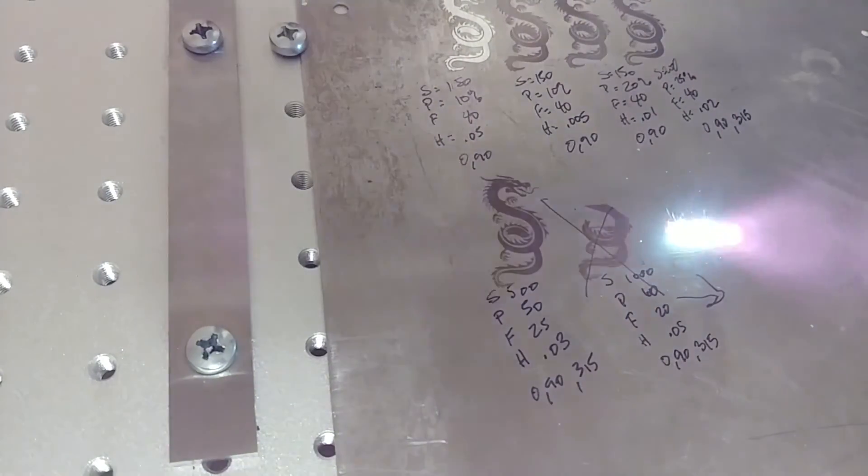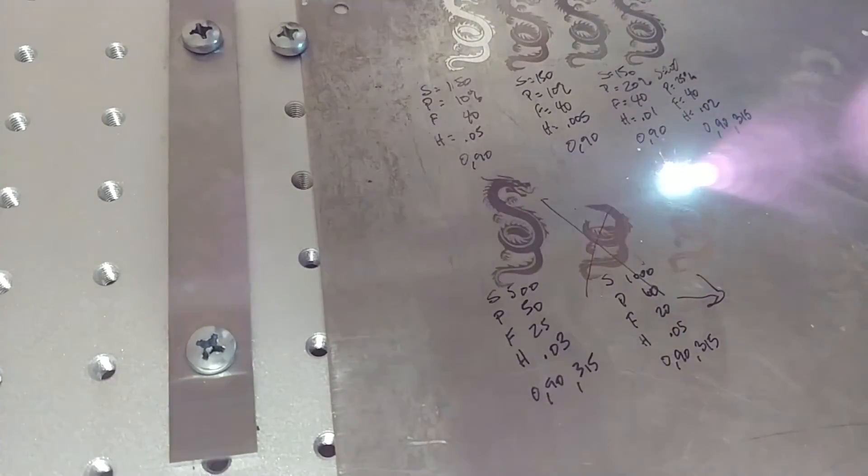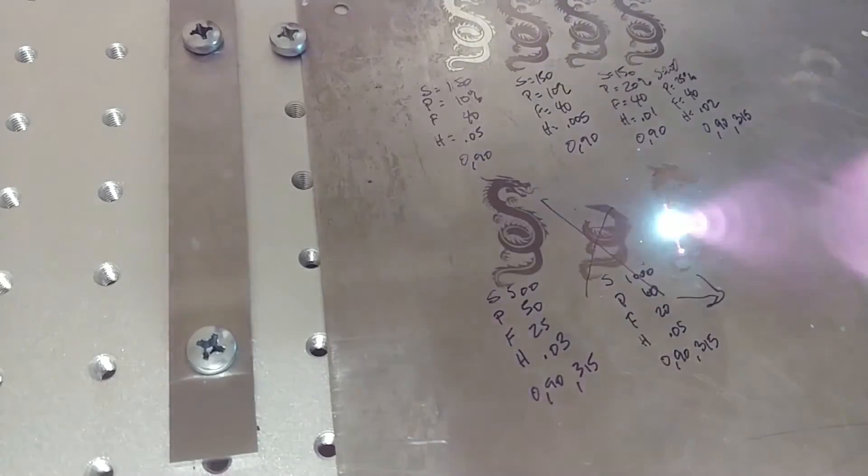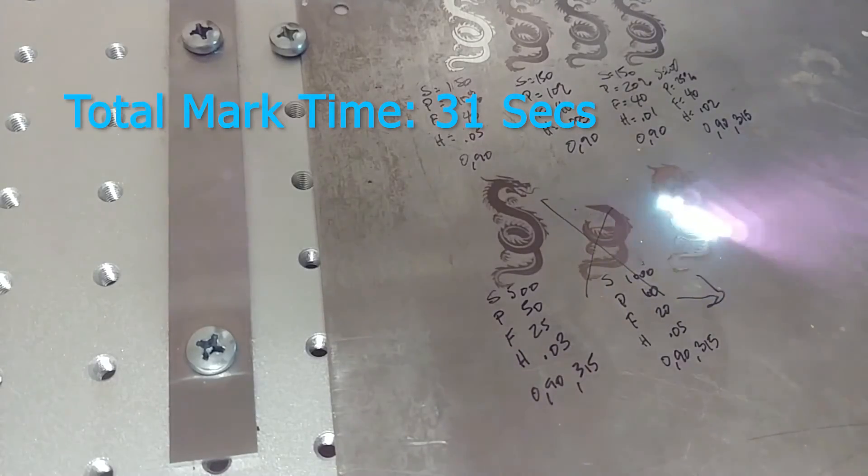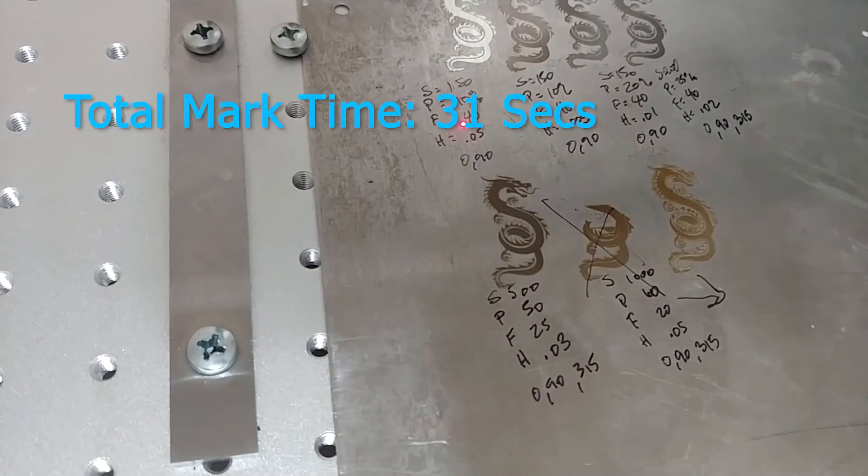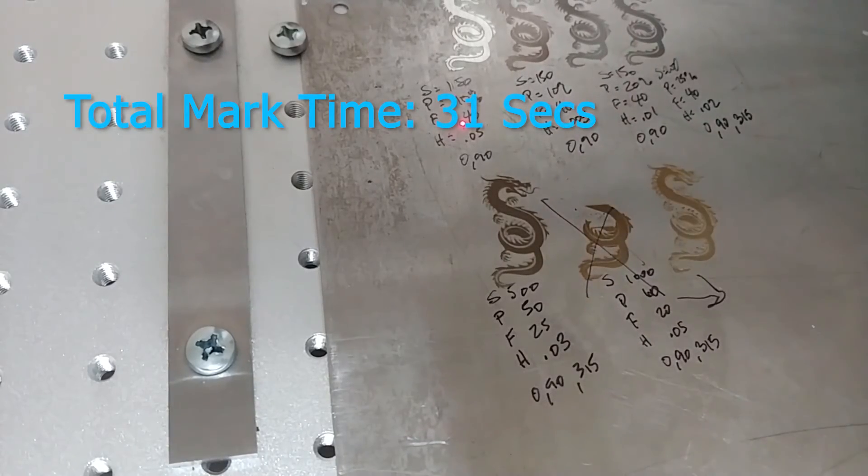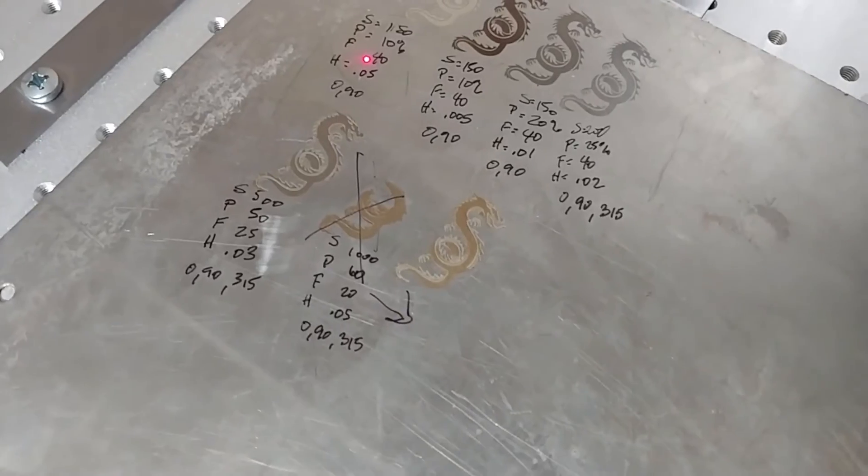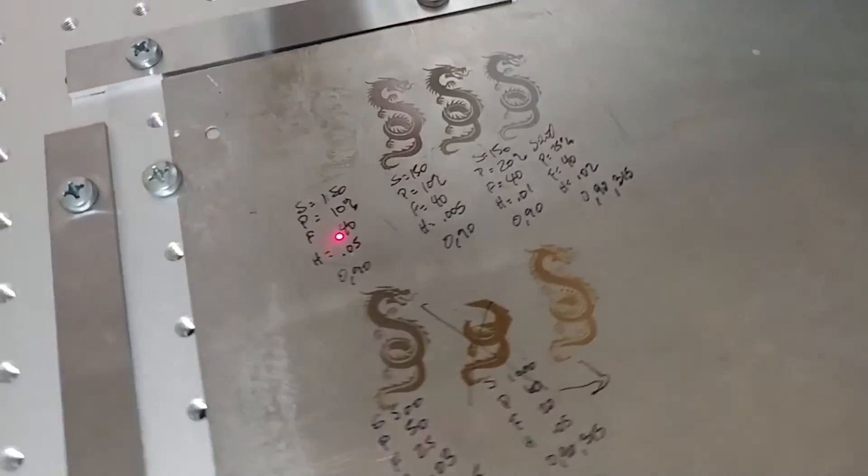I changed my settings by writing them on the stainless steel physically, but I didn't actually change them in the computer before I started the mark, so I stopped that one partially through. We're going to increase the speed to double, 1,000 millimeters per second. We increased the power to 60%. The frequency is now all the way down to 20 kilohertz. The hatch is all the way up to 0.05 millimeters, and we're still doing the three angles. The upside of these settings is that the total marking time is only 31 seconds, so pretty fast. The downside is you can see it's pretty brown, so if you're looking for a black mark or a silver mark or even a white mark, then these settings are probably not the right approach.